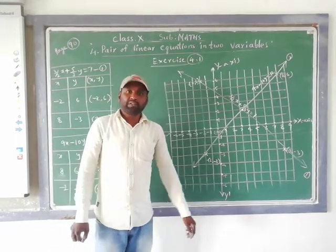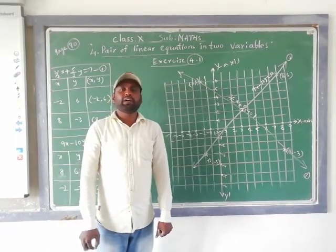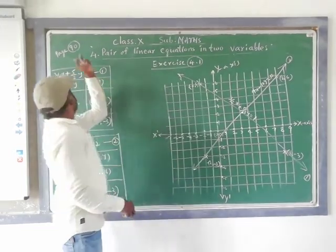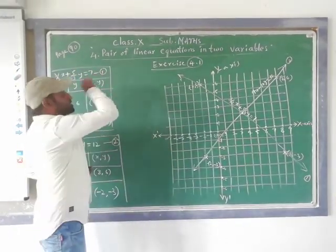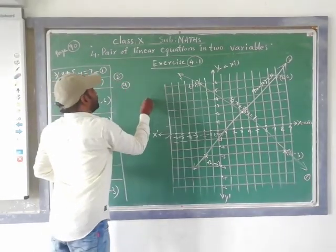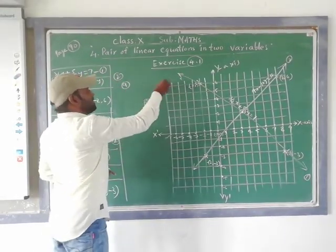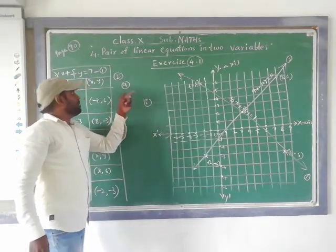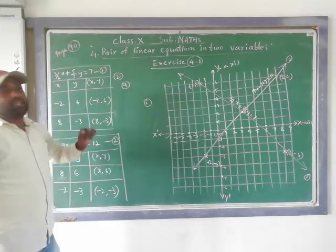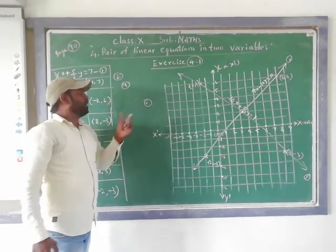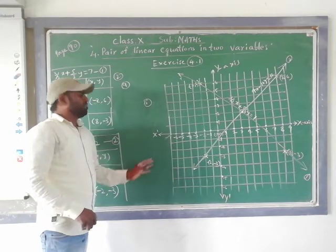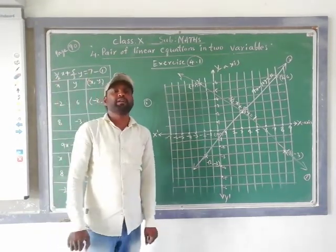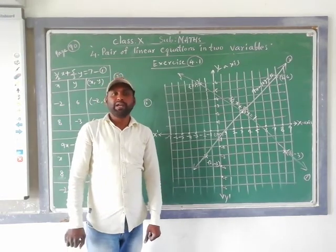If you draw this by yourself on the graph paper, you will understand it even better. In Exercise 4.2, there are nine problems from A to I. Yesterday I explained problem A, today I explained problem C. The remaining problems follow the same method of graphical representation — practice them for better understanding. All the best!